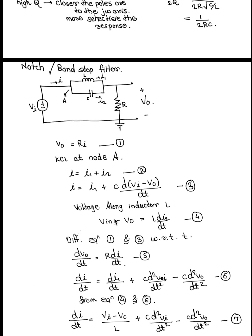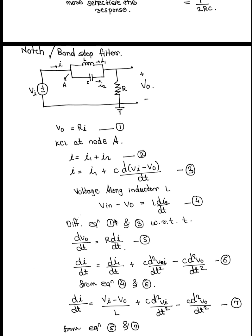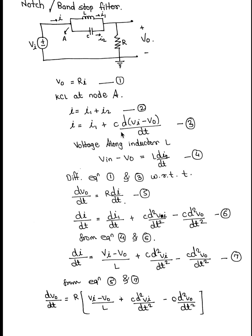The second filter is the notch filter, also called a bandstop filter. Using KCL at node A, we analyze the circuit. A bandstop filter allows all frequencies to pass except those at which the circuit is in resonance. When the circuit is in resonance, the LC circuit has maximum impedance. Since impedance is resistance to the flow of current, at resonance there is no current flow, and those frequencies are stopped.